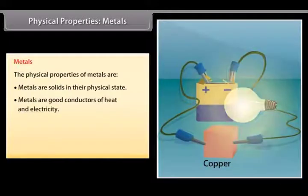Good conductors of heat and electricity. Metals are good conductors of electricity as they have free electrons. For example, silver and copper are the best conductors of heat and electricity, whereas lead is the poorest conductor of heat.